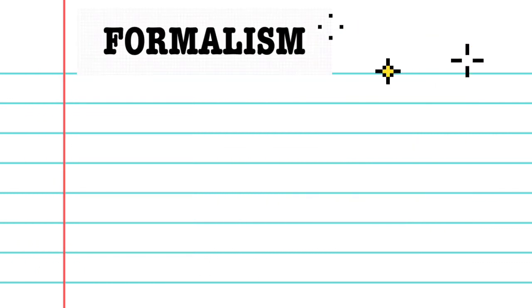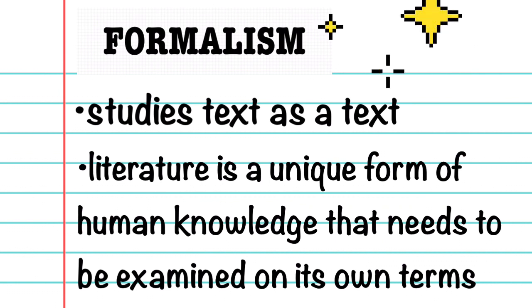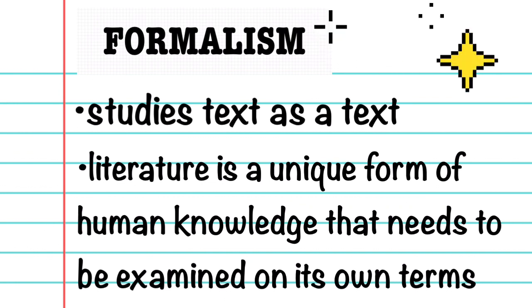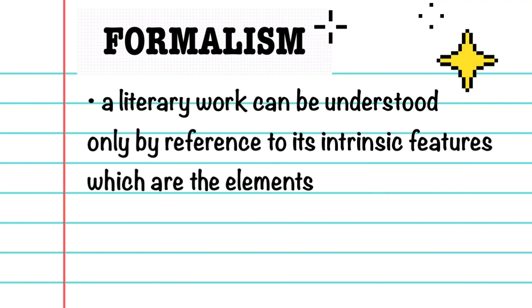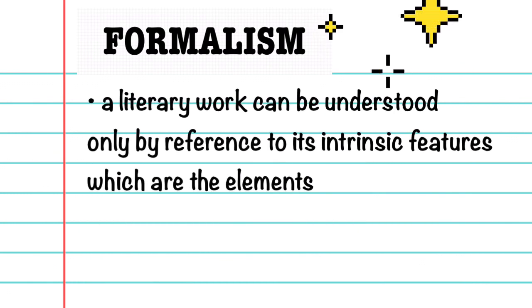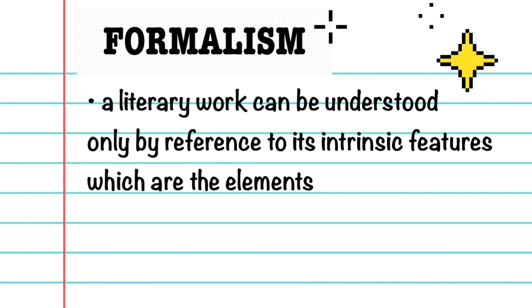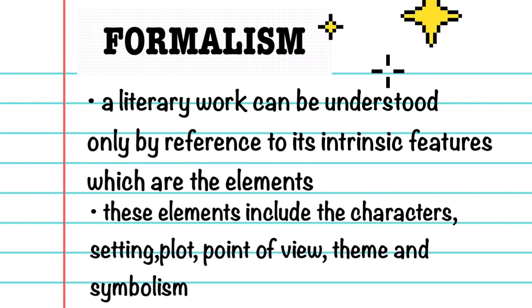Let's start with Formalism. Formalism studies text as a text. In Formalism, literature is a unique form of human knowledge that needs to be examined on its own terms. A literary work can be understood only by reference to its intrinsic features, which are the elements.